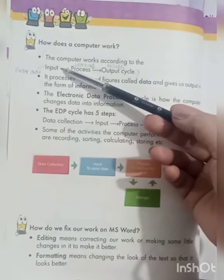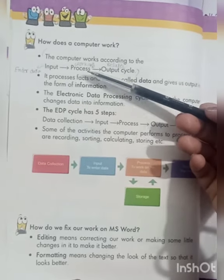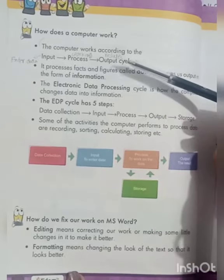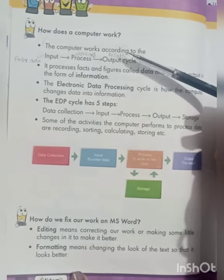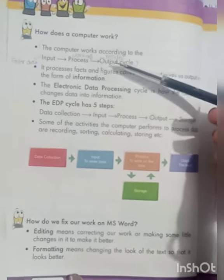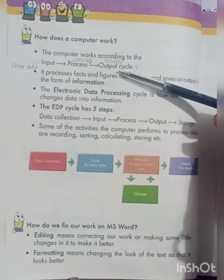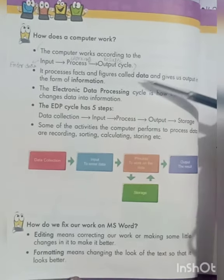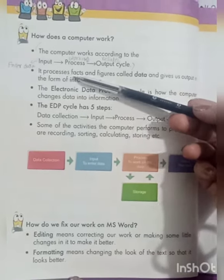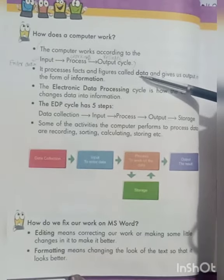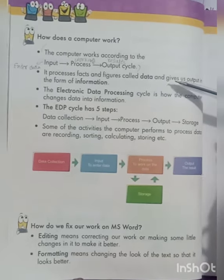We enter data into the computer and we call it input. Process is called working on the data. The computer works on the input-process-output cycle. It processes facts and figures called data.